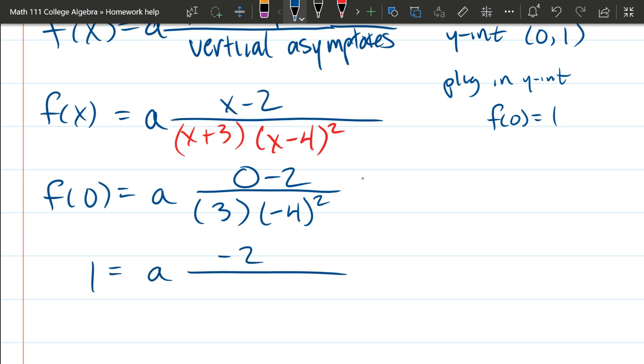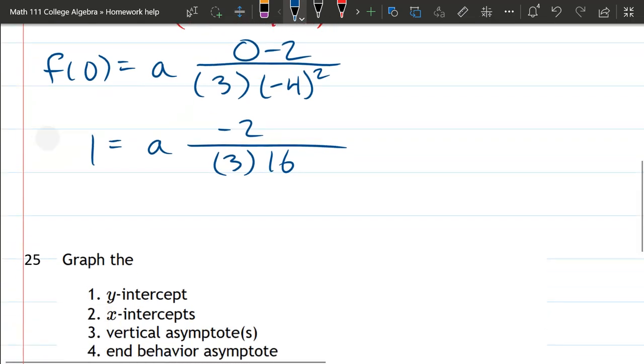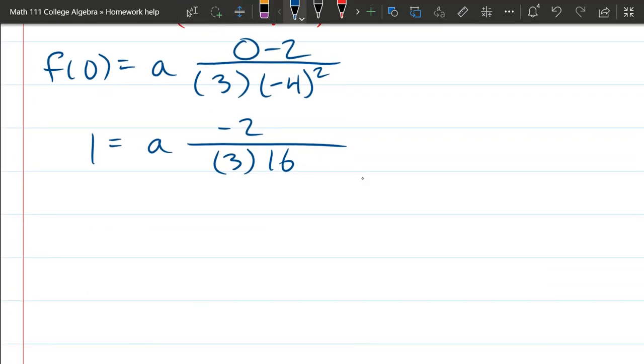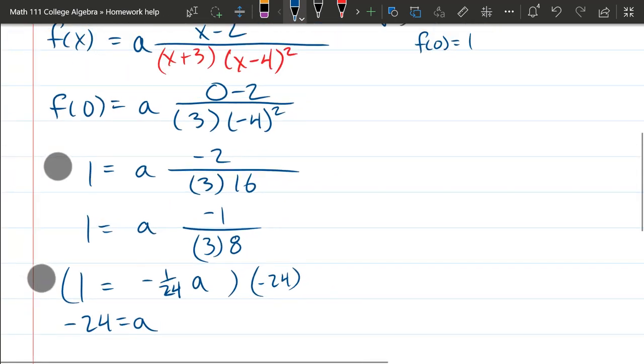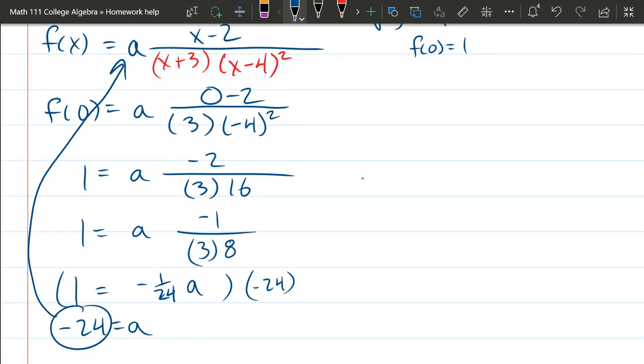So we've got negative 2. Negative 4 squared is 16. We've got a 3. Now we just reduce the fraction. Let me push this down more. That will be the next thing we do. So I can cancel the 2 and the 16, so it will turn into a negative 1 and an 8 times 3. 3 times 8 is 24. So we've got negative 1, 24th a equals 1. Multiply both sides by negative 24. And we've got negative 24 equals a. And all we have to do is plug in that negative 24 into the a value right there.